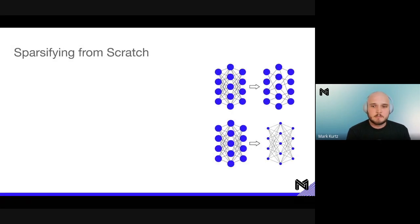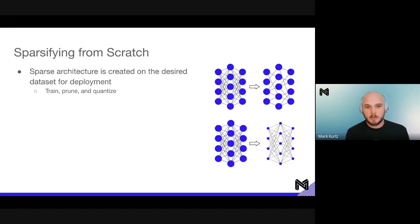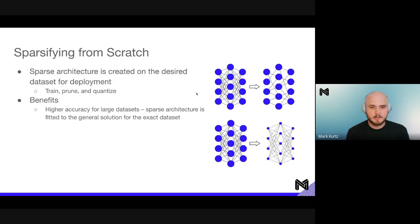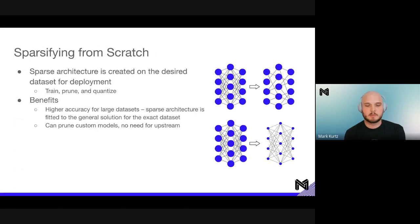Let's dive into sparsifying from scratch. We want to create a sparse architecture on the desired deployment dataset, training on that dataset, then pruning, then quantizing — all on that singular dataset rather than a much larger upstream one. The benefits: we enable higher accuracy for large datasets, the sparse architecture is fitted to the exact dataset's solution rather than a general one that may not transfer well. We can also prune custom models with no need for an upstream pre-pruned model.